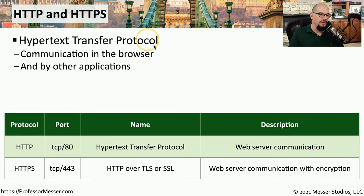Network administrators are often responsible for managing switches, routers, firewalls, servers, and other devices. To check in and gather statistics from those devices, we can use a specialized protocol called SNMP, the Simple Network Management Protocol, which commonly gathers statistics using UDP over port 161. SNMP can use different versions. Version 1 uses structured tables and sends all communication in the clear. Version 2 allowed for bulk transfers of information but still sent that information across the network without any type of encryption.